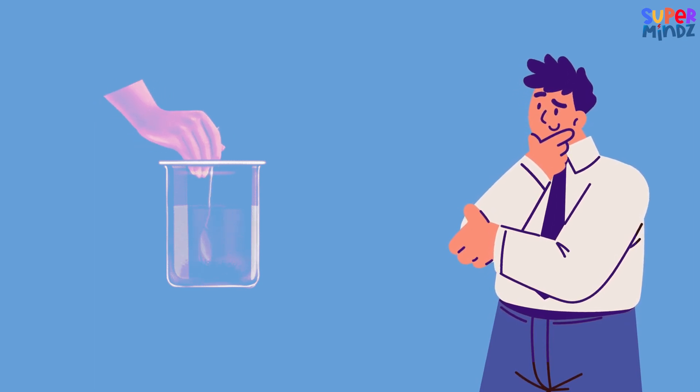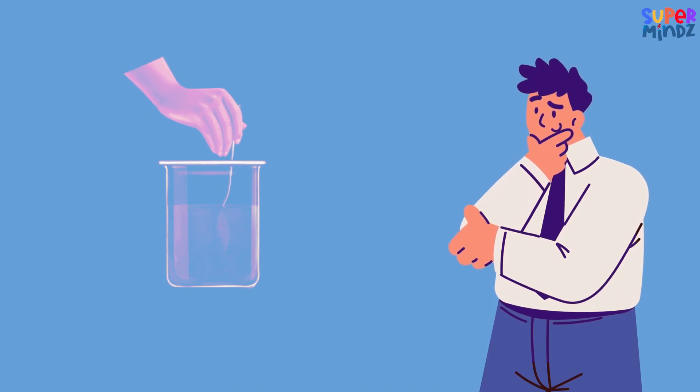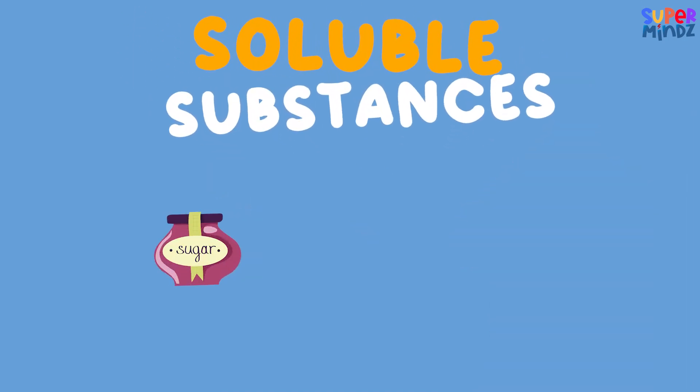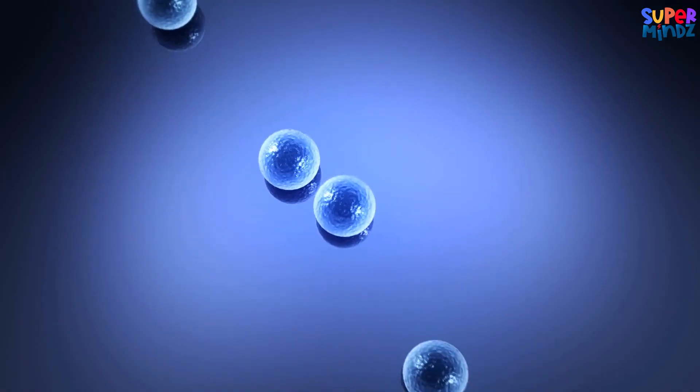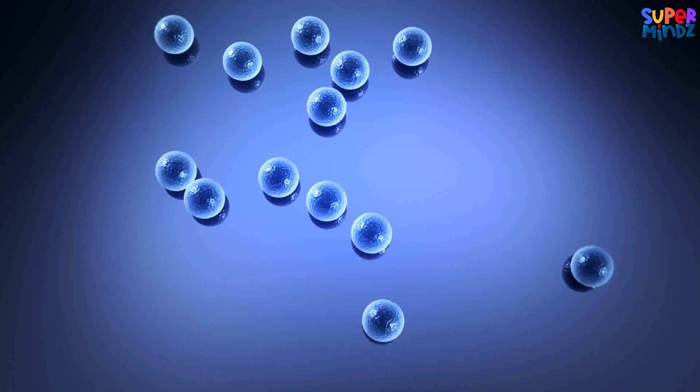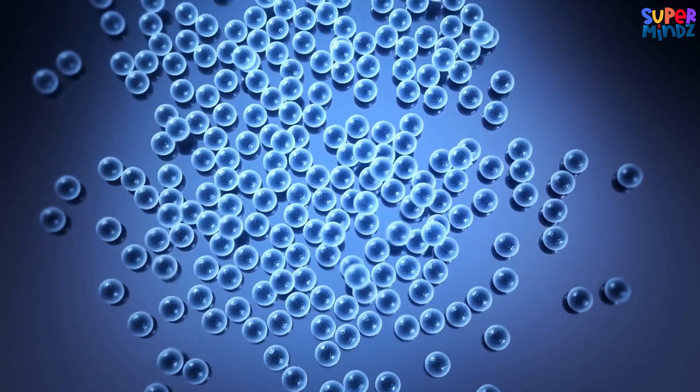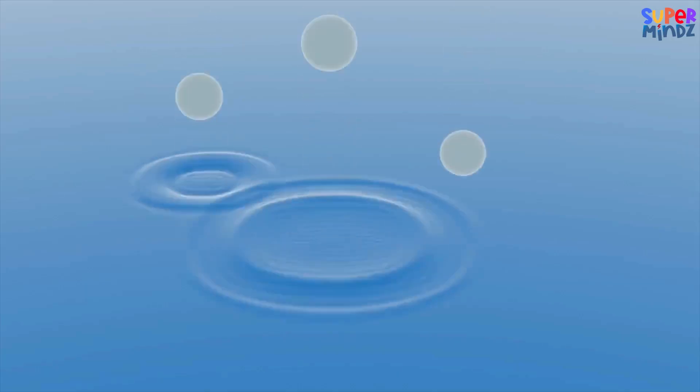Now let's think about why some things dissolve in water while others don't. It all comes down to the molecules in the substances. In soluble substances like sugar and salt, the molecules are arranged in a way that allows them to break apart easily and mix with the water molecules. But in insoluble substances like sand, the molecules are arranged in a way that repels water, so they don't mix at all.